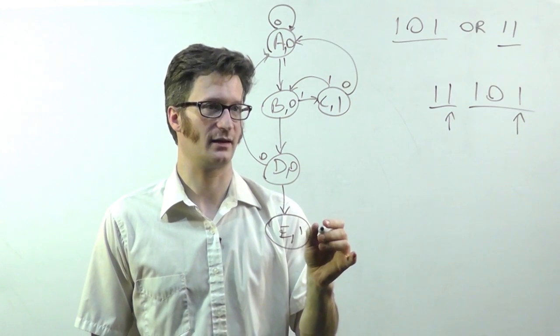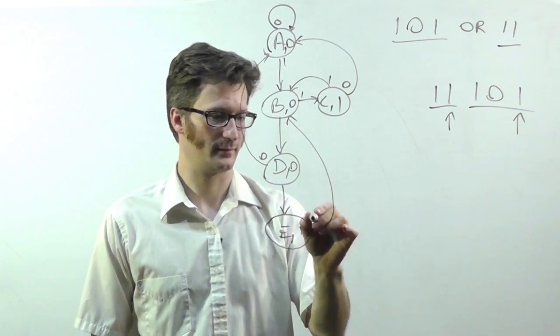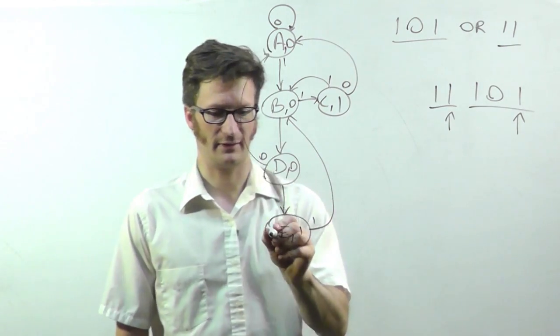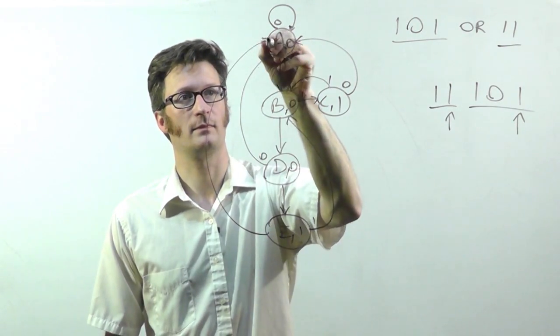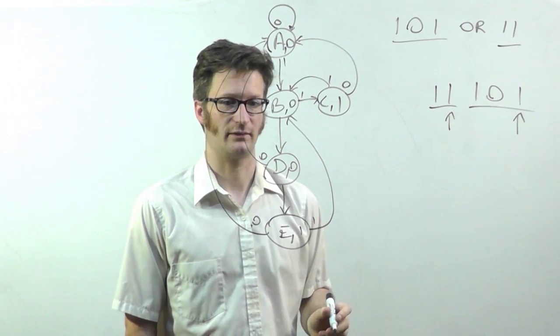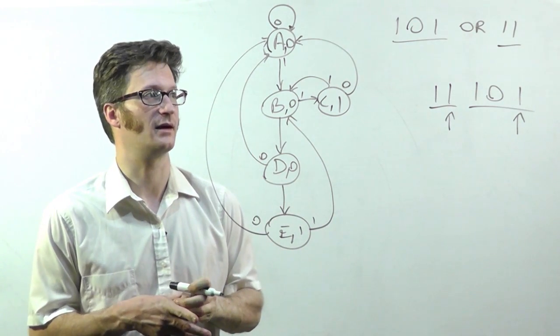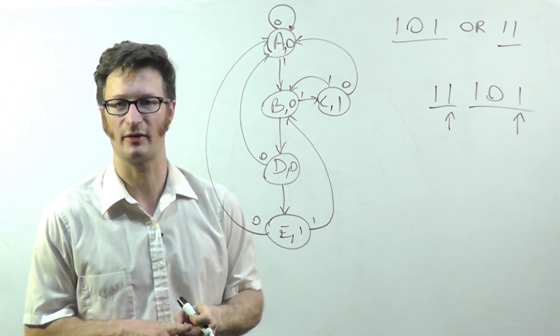And the same thing with this, if I detect a 1, I'm going to go to state B, and if I detect a 0, I'm going to go up to state A. So there you go. That is a state machine that can detect two different codes in a serial sequence.